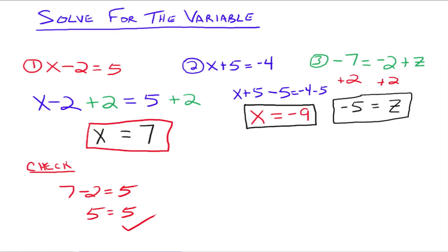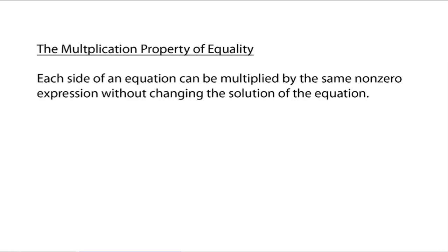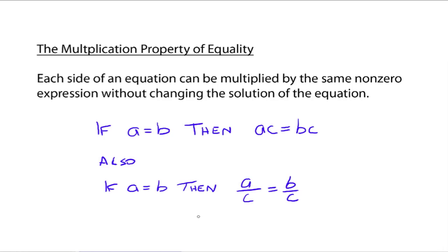Now we have the multiplication property of equality. It says that each side of an equation can be multiplied by the same non-zero expression without changing the solution. We have to say non-zero because multiplying both sides by zero just gives zero equals zero. In math symbols: if A equals B, then A times C equals B times C, where C is not zero. We can also think of it as division: A divided by C equals B divided by C, since division is the same as multiplying by the reciprocal. So we can multiply or divide both sides of an equation by any non-zero number.